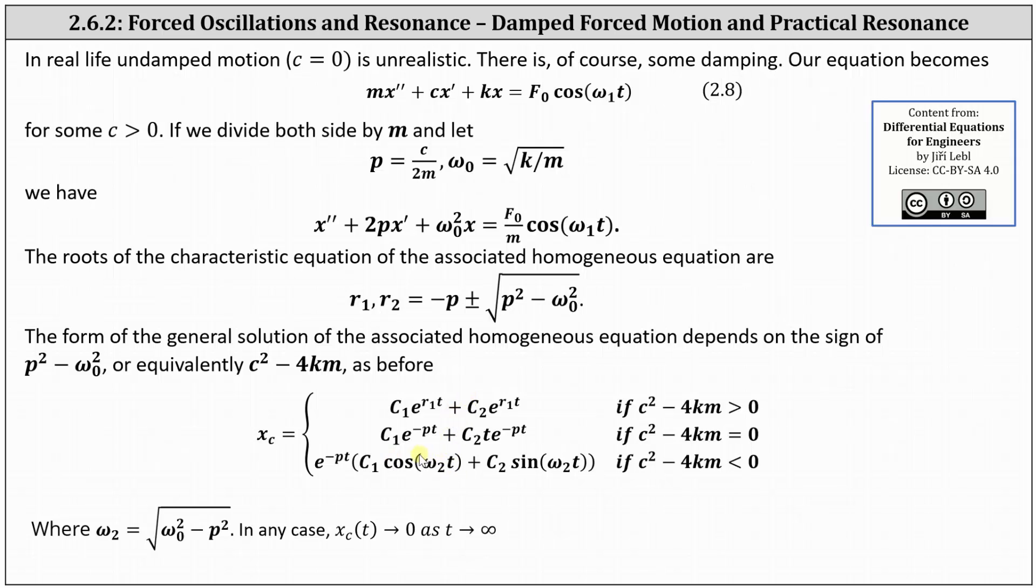Where if we have complex solutions, we have the third form where omega sub two is equal to the square root of the quantity omega sub zero squared minus P squared.